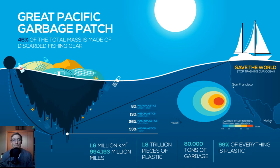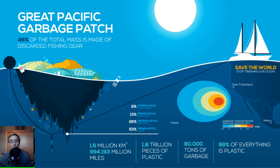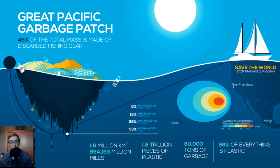In the Great Pacific Garbage Patch, 46 percent of the total mass is made up of discarded fishing gear — pretty concerning given how important fishing is economically and for food. Fish like Atlantic cod and halibut that we've grown to love are affected by this big pollution issue stemming from discarded fishing equipment.